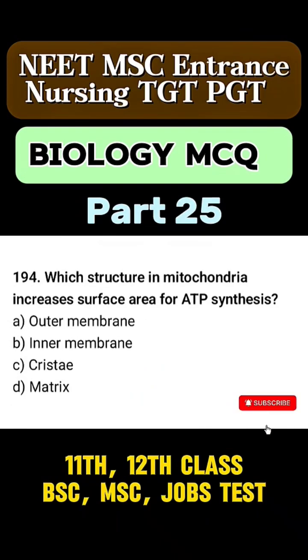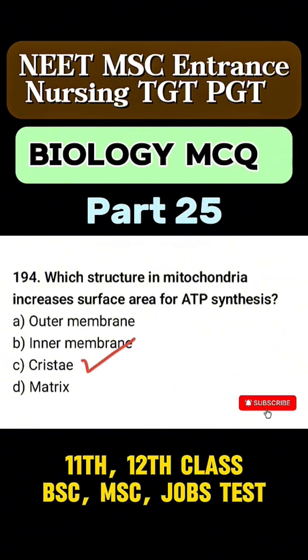Question 194. Which structure in mitochondria increases surface area for ATP synthesis? Correct answer is option C. Cristae.